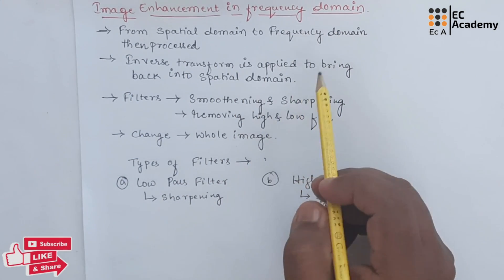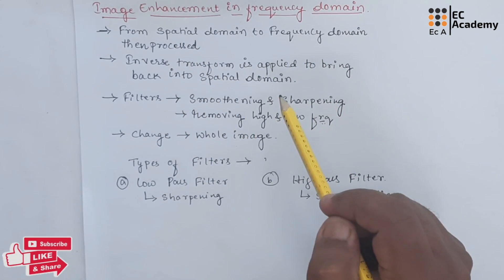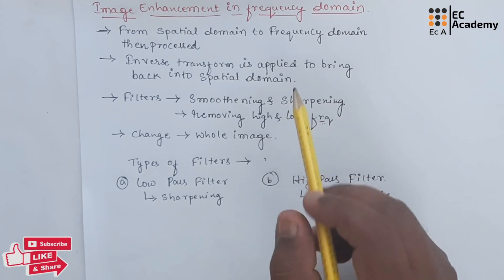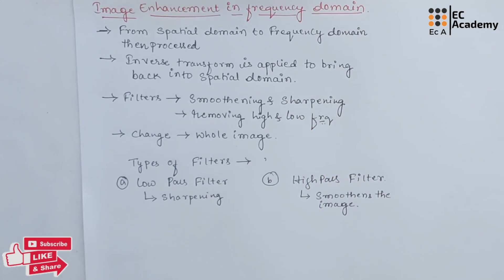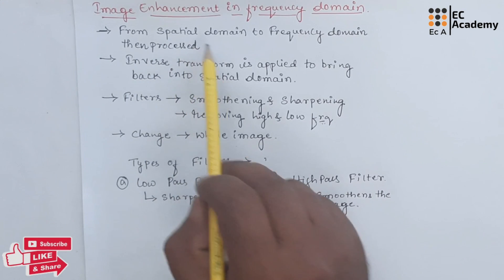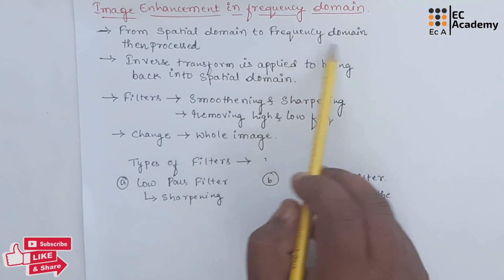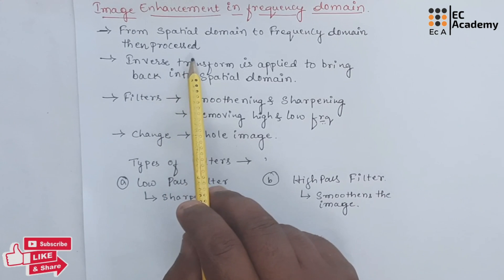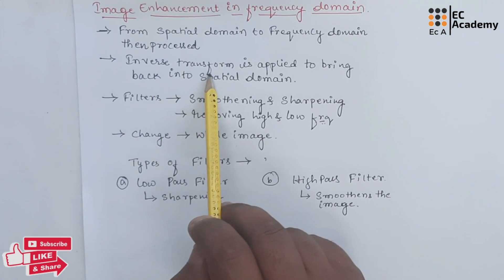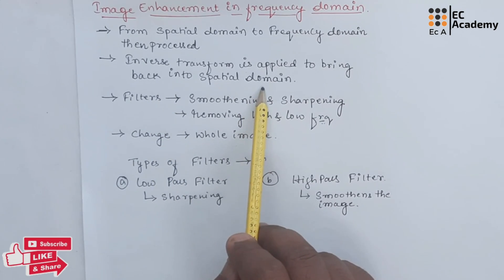In the previous lecture, we understood about the image enhancement in spatial domain where there was direct manipulation of pixels of an image. In Frequency Domain, the image from spatial domain will be transformed into Frequency Domain, then it is processed. After processing, inverse transform is applied to bring back the image into spatial domain.